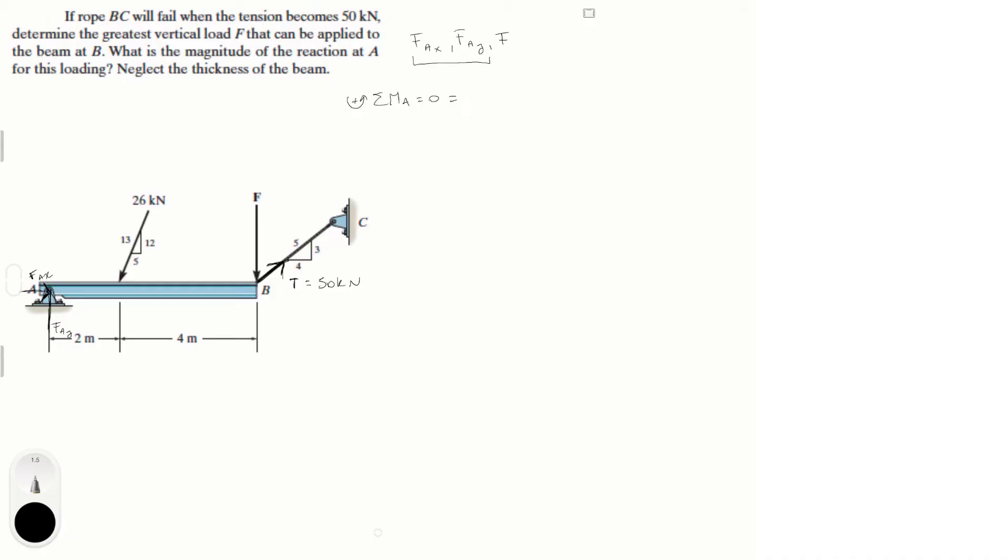So from A, right here, we have the moment created by this 26 kN force, which is 26 kN. But only the Y component is generating a moment. The X component, which is this one, is not generating a moment. The Y component is given by 12 over 13 times 26 kN because of this triangle. And you have to multiply by the distance from the forces applied to A, which is 2 meters.